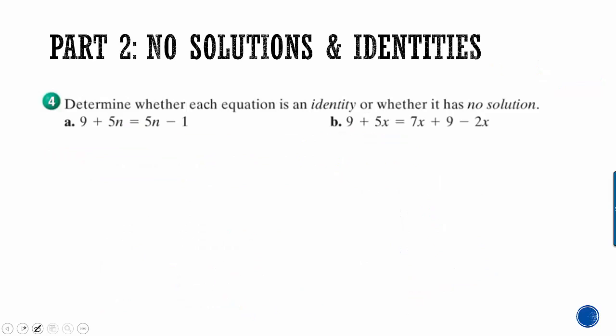So determine whether each equation is an identity or whether it has no solution. So you just start solving it, just like you would any other problem. So what I'm going to do, I have n's on both sides. I'm going to move them all to the left. So let's subtract 5n from both sides. Hopefully your brain's working. And something happens. All of our n's get crossed off. And on the left, I'm left with 9. And on the right, I'm left with negative 1. So I get this statement, 9 equals negative 1. And this can never, ever, ever happen. So that means, because this is not true, that I have no solutions.